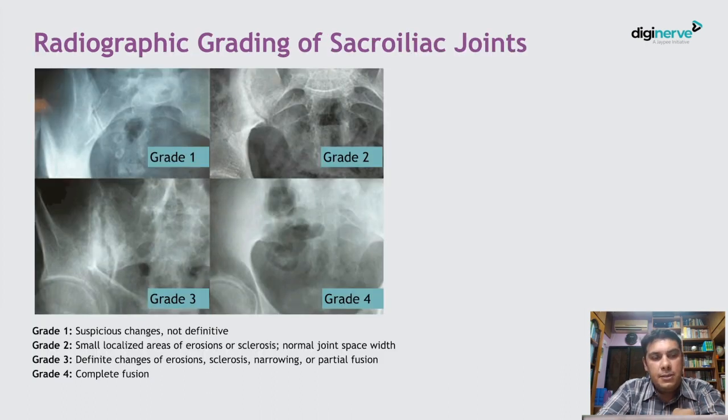In ankylosing spondylitis, different varieties of sacroiliitis may be present. Radiologically, we divide it into four grades.